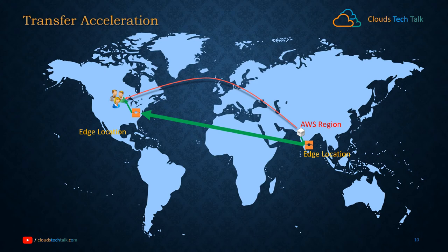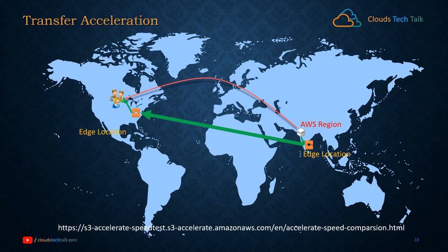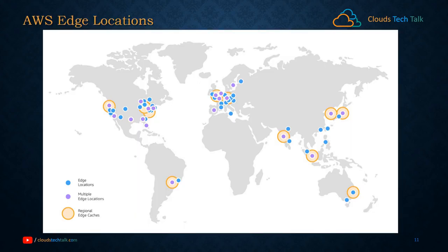If you enable transfer acceleration, US users will not notice the latency — it will be negligible. In short, the further away you are from the AWS region where your data is stored, the higher the speed improvement you can expect by enabling transfer acceleration. There is a tool at a specific URL where you can compare the speed improvement from your location to different AWS regions. These edge locations are distributed across more than hundreds of points worldwide.